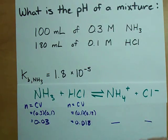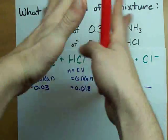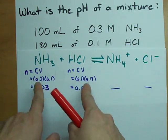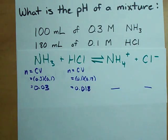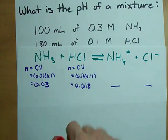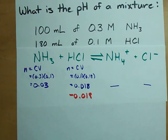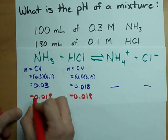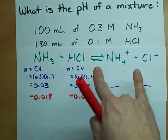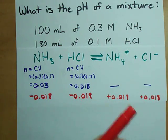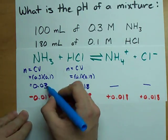In purple, the number of moles you start with. But then there's a reaction: the ammonia and the hydrochloric acid react together and make NH4+ and Cl- as products. How much reacts away? Which runs out first? They react in a 1:1 ratio and I have 0.03 of this and 0.018 of that. This is less, so this runs out first. I'm going to lose all of my 0.018 moles of HCl. They react 1:1 so I also lose 0.018 moles of NH3. They produce products in 1:1 ratios, so I gain 0.018 moles of NH4+ and 0.018 moles of Cl-. In red is the change.